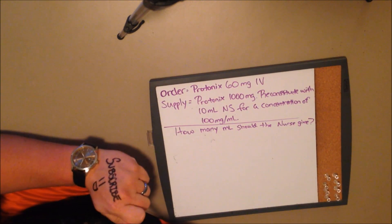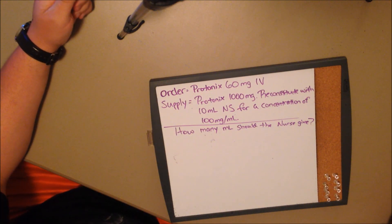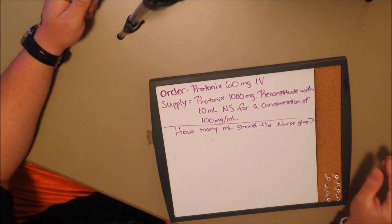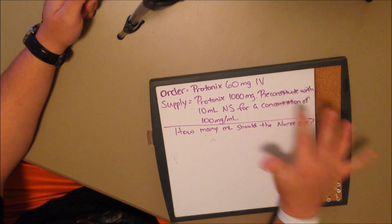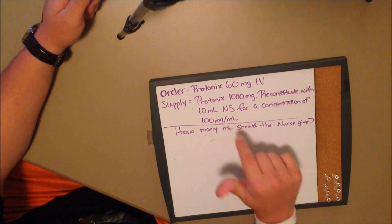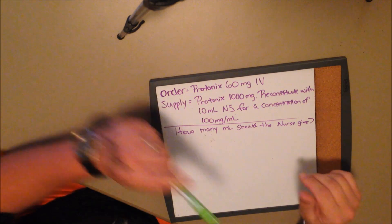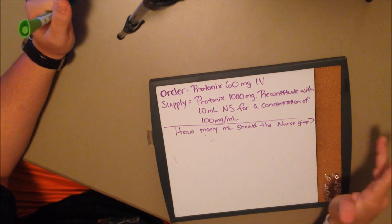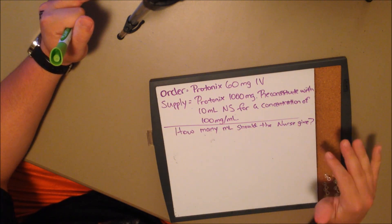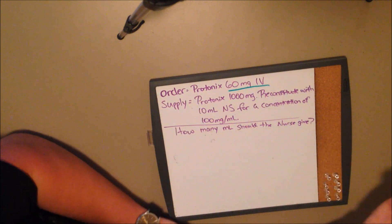The last question I want to give you is a reconstitution question. Our order is Protonix 60 milligrams IV. Our supply is Protonix 1,000 milligrams — reconstitute it with 10 milliliters of normal saline for a total concentration of 100 milligrams per milliliter. The question asks: how many milliliters should the nurse give? This can be confusing — reconstitution questions are actually one of the types that gave me problems when I first started.